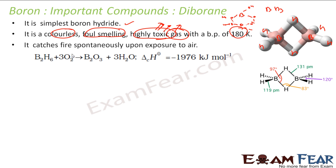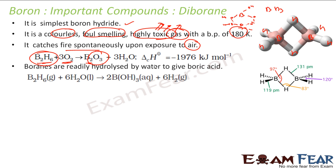Diborane catches fire easily when exposed to air. The moment B2H6 reacts with water or oxygen, it gets oxidized to B2O3, because it is very unstable. It is also readily hydrolyzed — meaning it reacts with water.